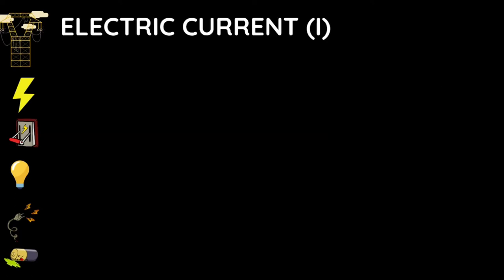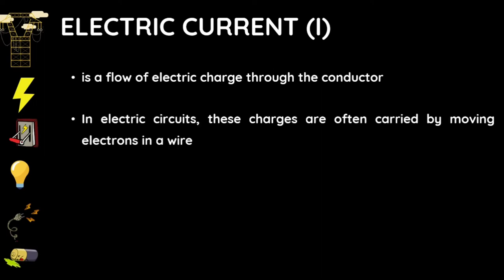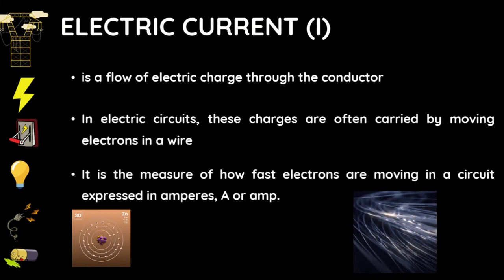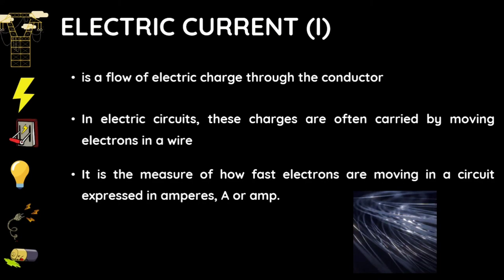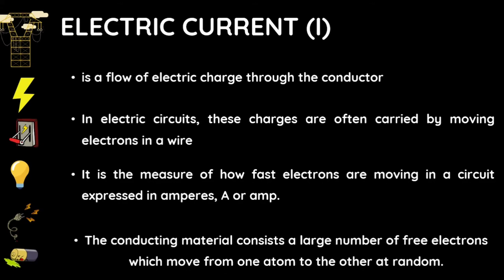Let's talk about current. Current is the flow of electric charge through a conductor. In electric circuits, these charges are often carried by moving electrons in a wire. It is the measure of how fast electrons are moving in a circuit, expressed in amperes, written as capital letter A or AMP. The conducting material consists of a large number of free electrons which move from one atom to another at random.